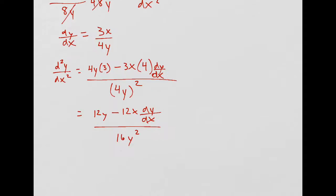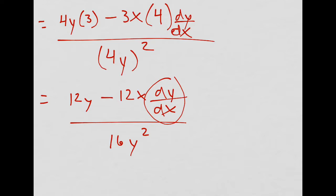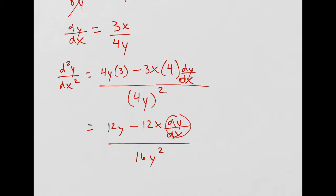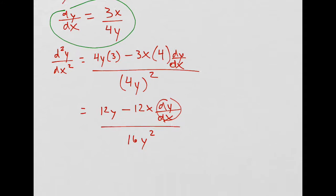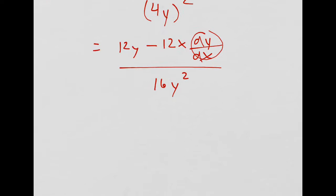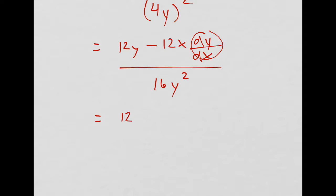But the instructions were saying they want it only in terms of x and y, and we have it in terms of x, y, and the derivative of y, so we can replace this with 3x over 4y. So I'll have 12y minus 12x times 3x over 4y.